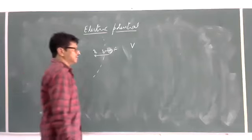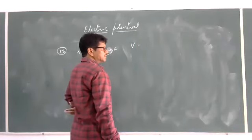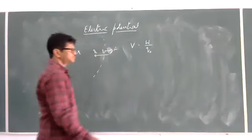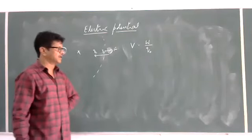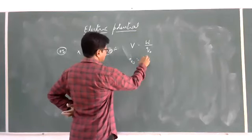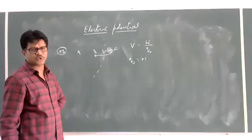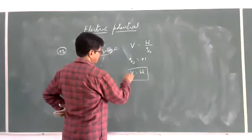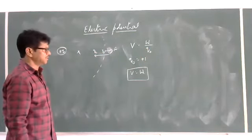V = Work done / charge. Generally, the test charge is considered as a unit positive charge. So V = W (work done) when the charge is a unit positive charge.